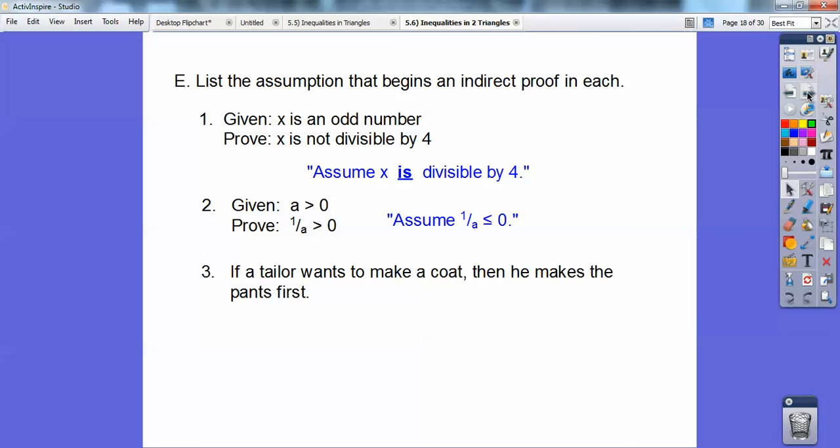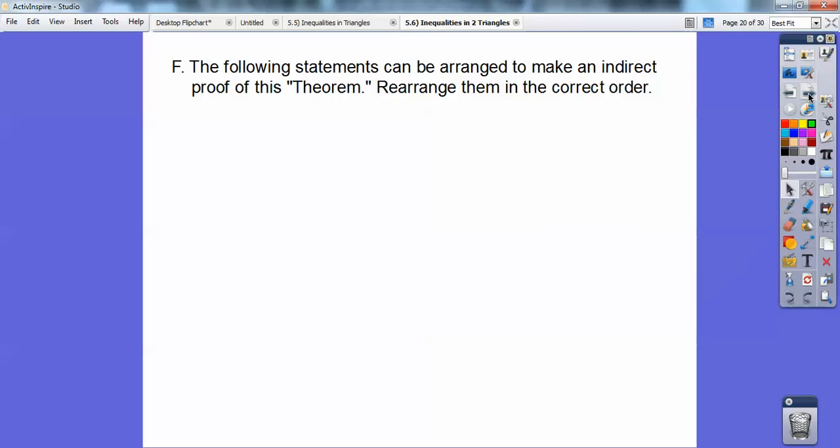Here's a sentence. If a tailor wants to make a coat, then he makes his pants first. See this if-then form? The then part is your prove statement. He wants to make the pants first. So we're going to assume that he doesn't want to make the pants first. Easy, huh?